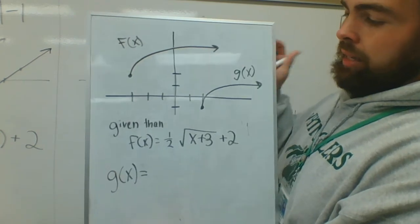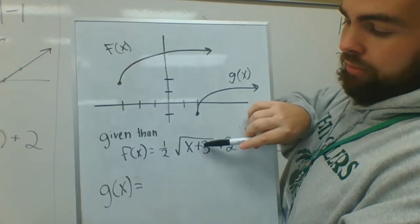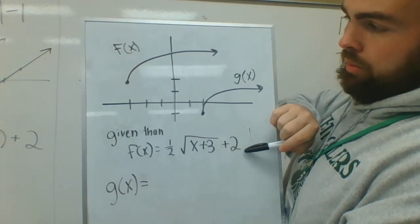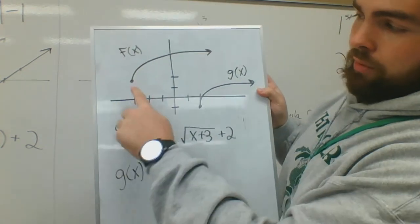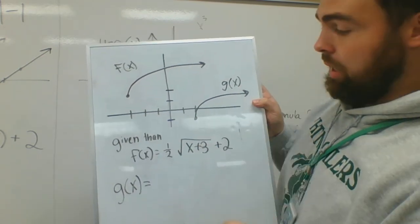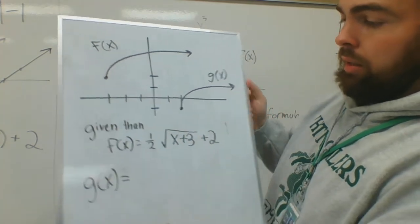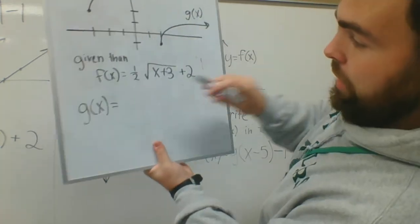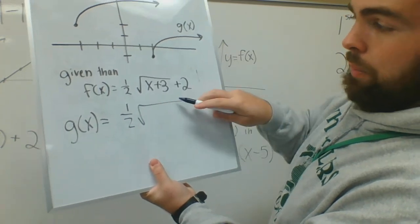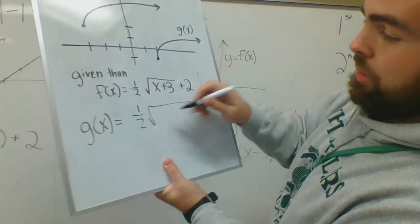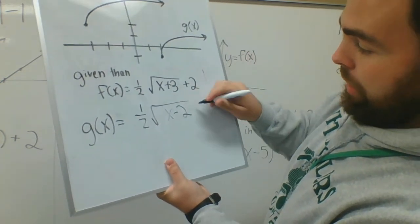Last example, you can see this is a square root example. This is f(x), this is g(x). Given that f(x) equals one half square root of x plus 3 plus 2, that just means it goes back 1, 2, 3, up 2. This is where the vertex is for this square root graph. You do the same thing for this. I realize it goes right 2 down 1, so all I have to do is rewrite this exact same formula: one half parenthesis square root, instead of plus 3 it's going to be minus 2, x minus 2.